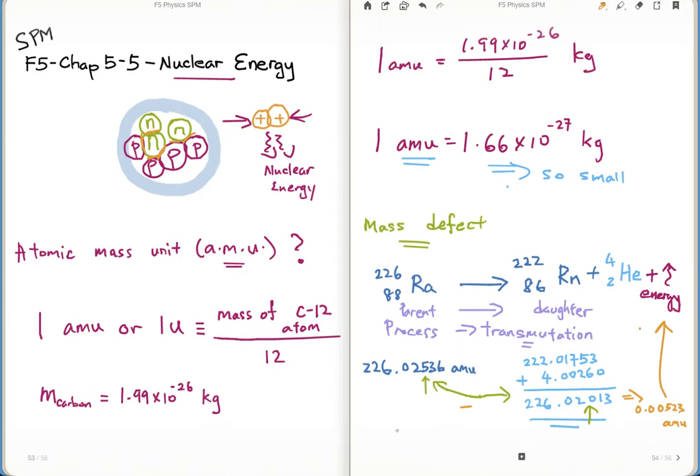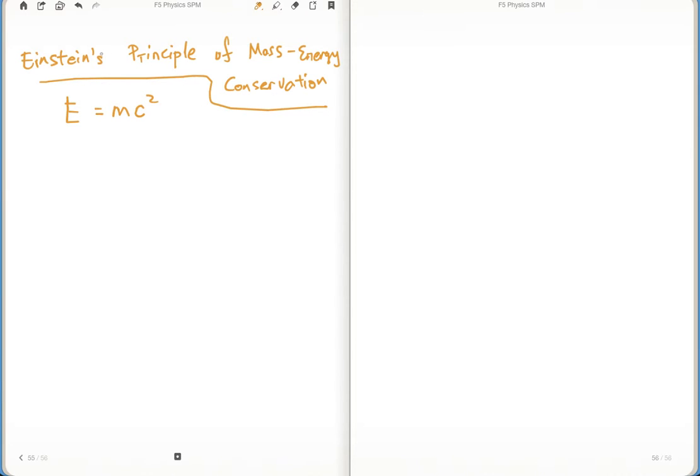This mass defect is in accordance with Einstein's principle of mass-energy conservation. You may pause this video for a while and go through the objective questions from your exercise book, and then you may want to resume this video. The principle of mass-energy conservation means it's conserved, meaning it's not lost anywhere, it's preserved. Einstein's equation is E equals mc squared.